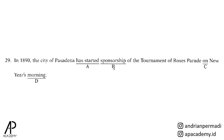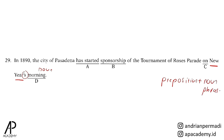Untuk nomor 29, kita lihat pilihan A: on new year's morning. New year adalah noun, lalu morning juga adalah noun. Apabila kita menemukan dua noun yang berbeda dan ingin mendampingkannya, salah satu caranya adalah dengan menggunakan apostrophe s yang menunjukkan kepemilikan dari satu noun dengan noun yang lainnya. Dalam hal ini, morning dimiliki oleh new year: pagi di tahun baru. Pilihan C, on sebagai preposition; salah satu pola yang bisa muncul setelah preposition adalah noun atau noun phrase. New year's morning adalah noun phrase. Oleh karena itu, penggunaan preposition on masih benar.